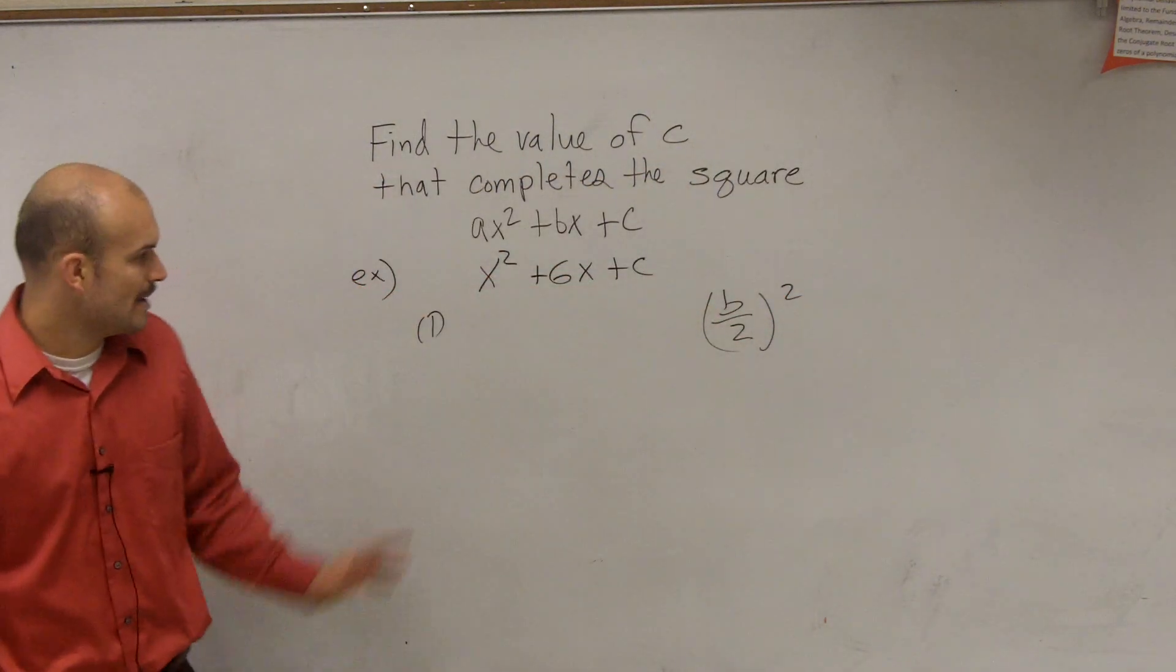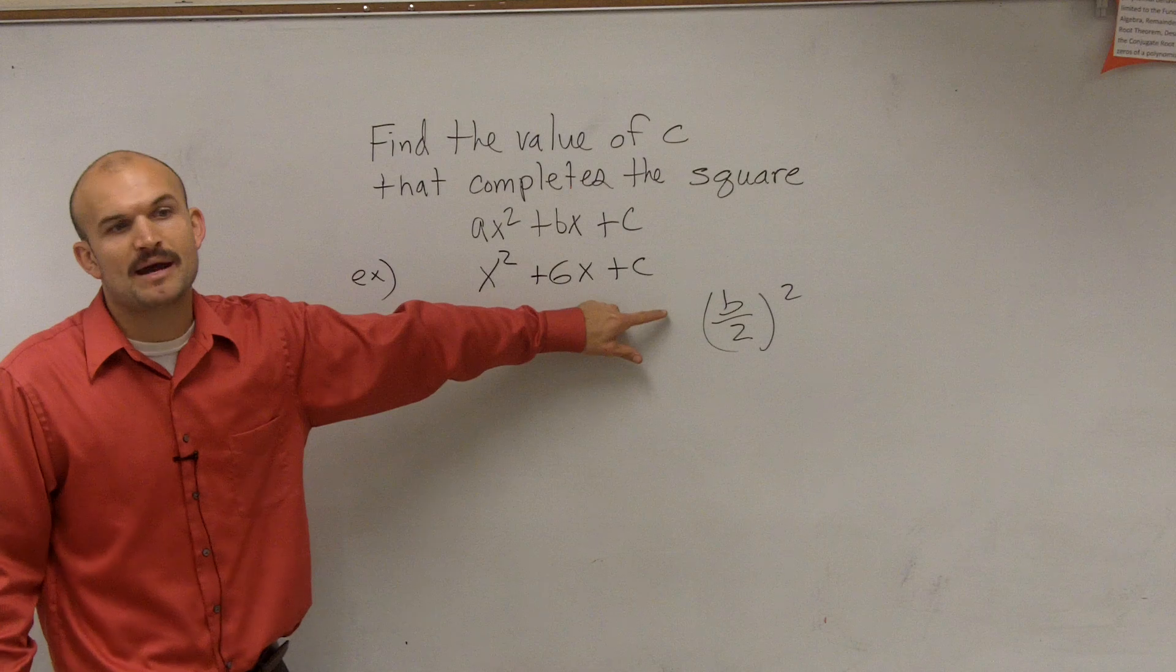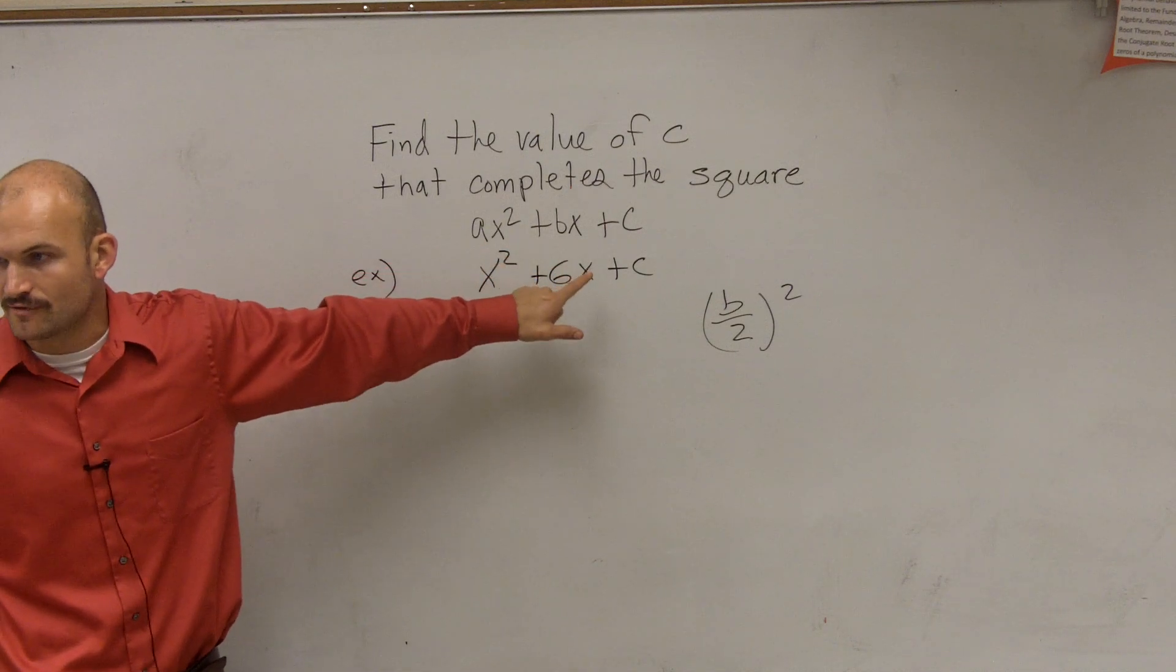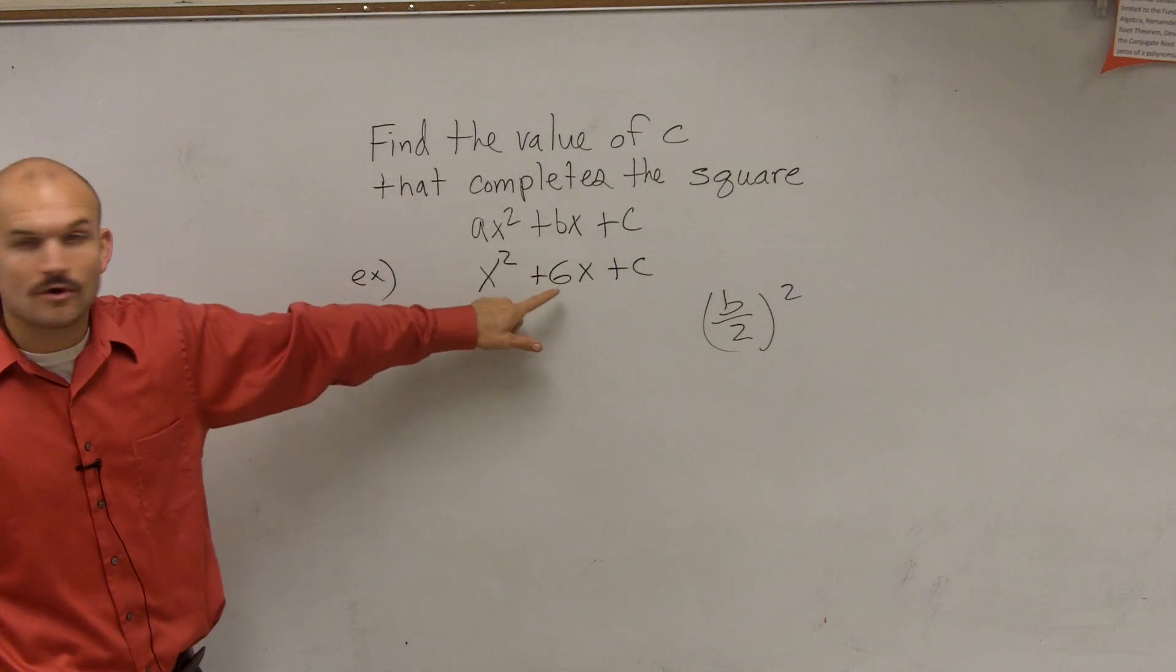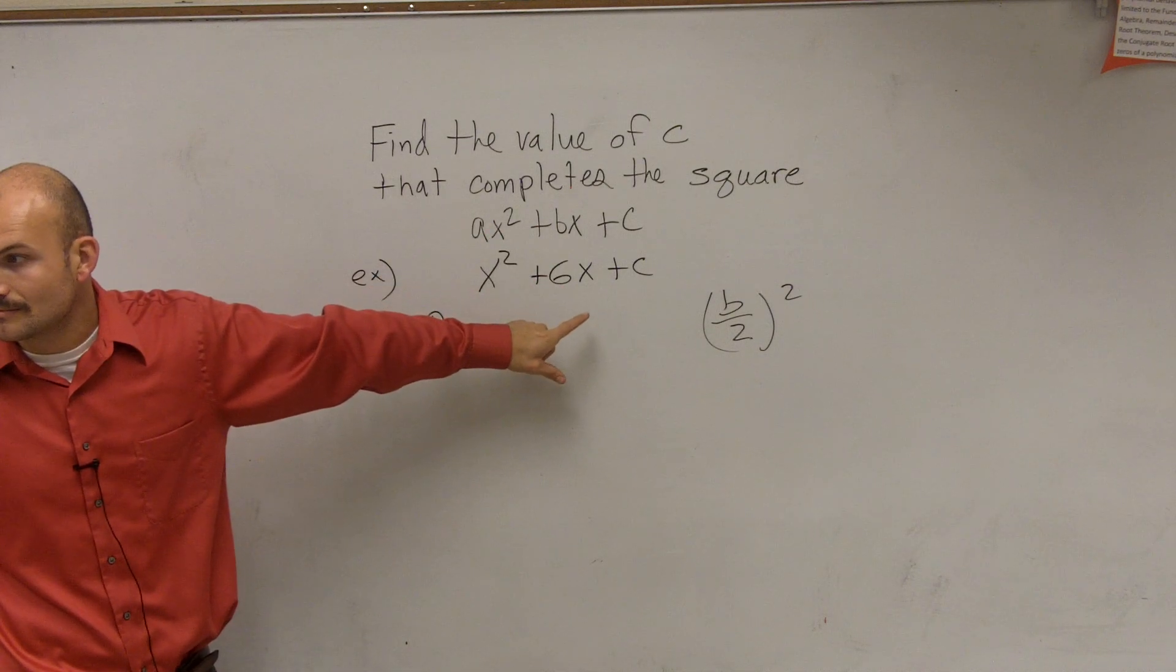So the first thing I need to know in my problem is I need to determine what is my b. Well, b is your coefficient of your linear variable, which in this case is just my x. So therefore, my b is going to be 6, correct?